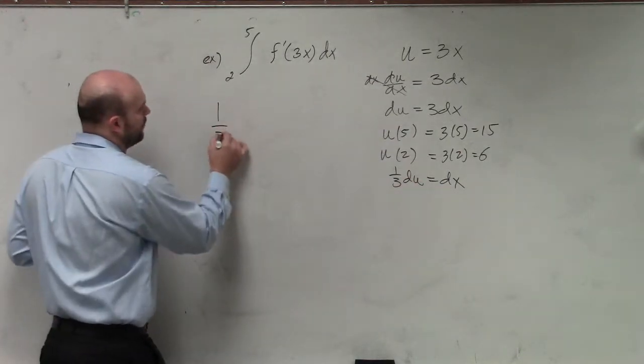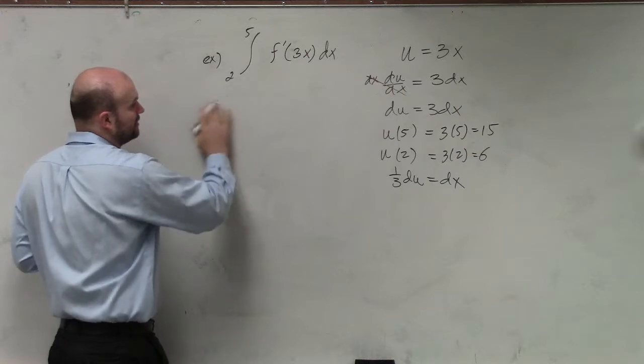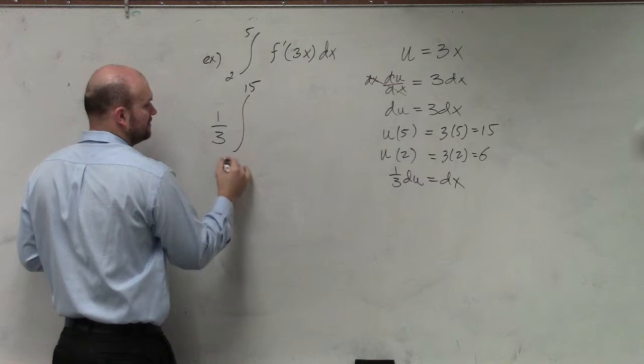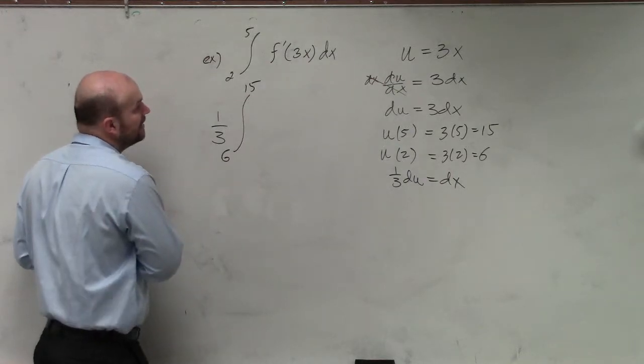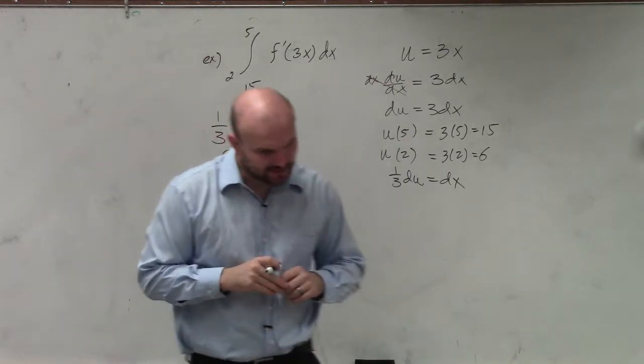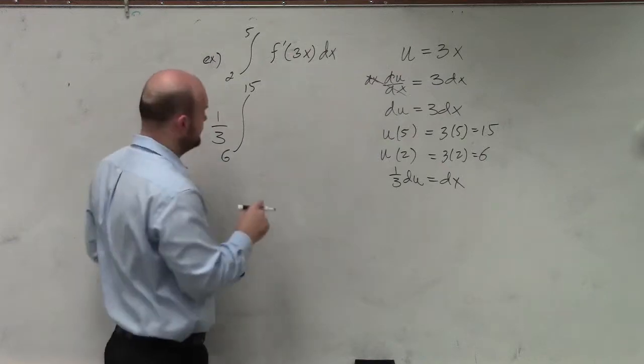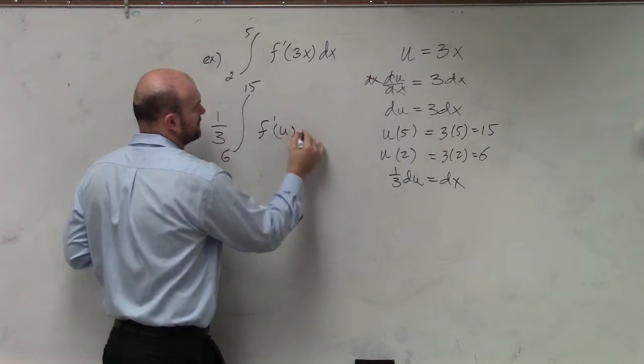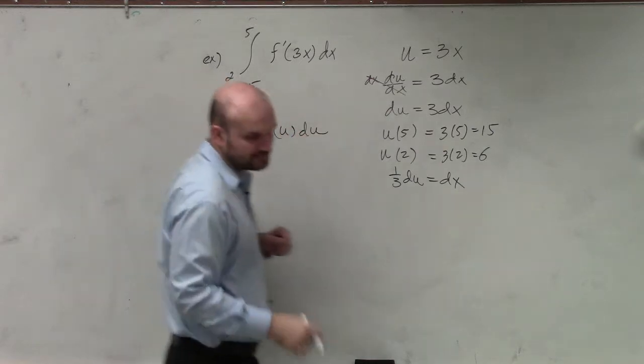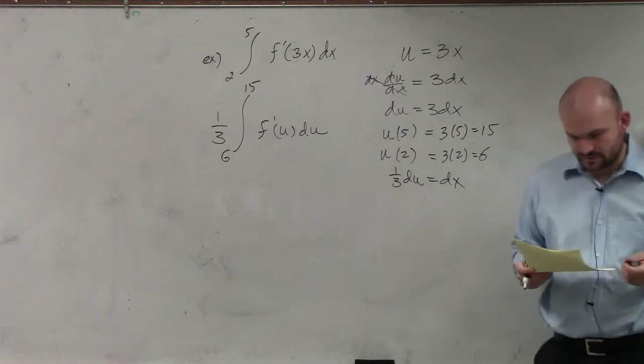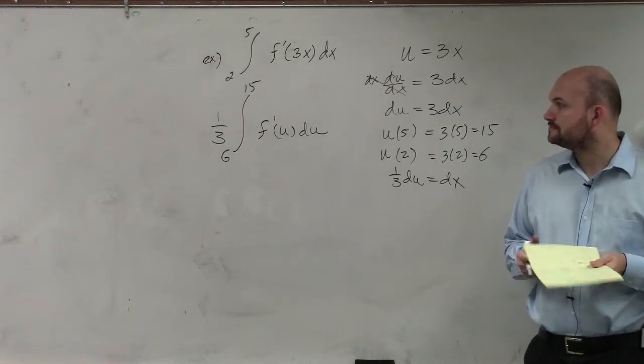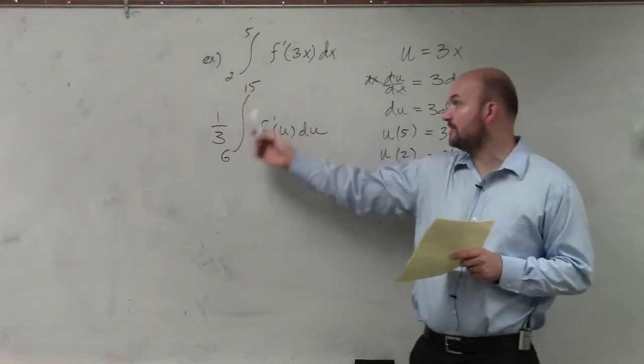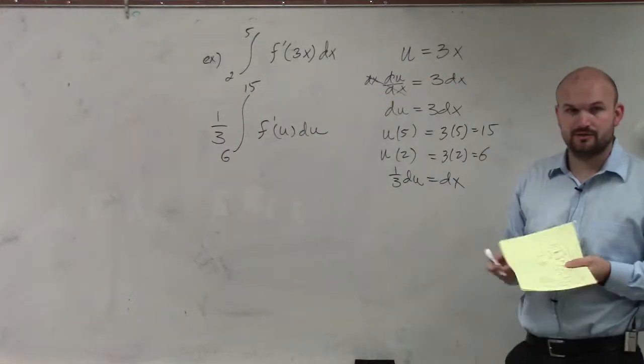So I have 1/3. My new upper and lower bounds for my u is now going to be 15 and 6. And then I'm going to be taking the integral of f'(u) du. So I have my du covered, I have my 1/3, and I have my new upper and lower bound based on my u.